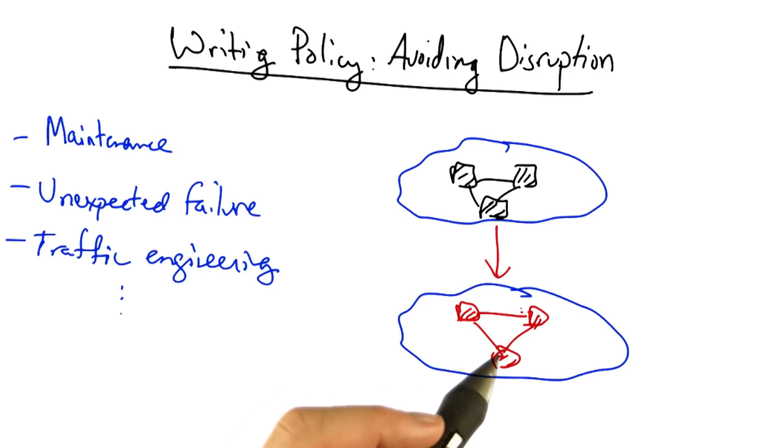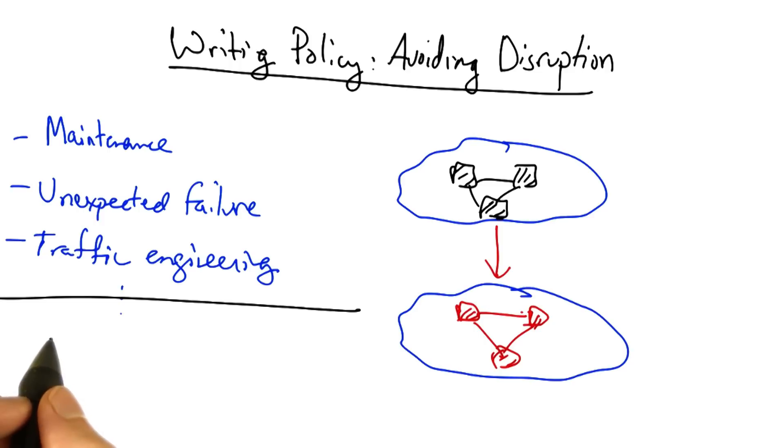And when that state transition happens, we want to make sure that forwarding remains correct and consistent. In particular, we would like to maintain the following invariants: there shouldn't be any forwarding loops, and there shouldn't be any black holes whereby a router or switch receives a packet and doesn't know what to do with it.